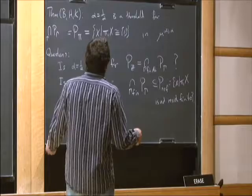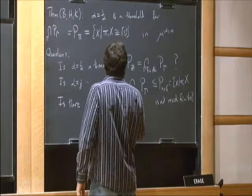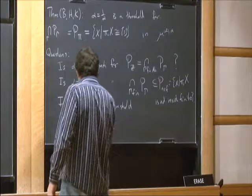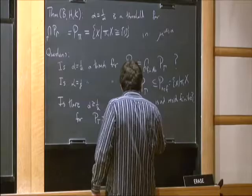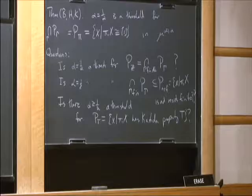One of the other things that we prove is that these are all hyperbolic, so that would be a surprise if this happened before 1/2, but we don't know how to prove this. Other questions one could ask: is there some α, bigger than or equal to 1/2, that is a threshold for property T — that π₁(X) has Kazhdan's property T?